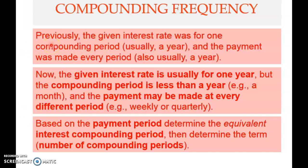If the payment is weekly, the interest rate must also be weekly, and the number of compounding periods must be the number of weeks. If monthly, everything must be in months. If quarterly, everything must be in quarters. If yearly, it goes back to the basic example. In real life you will encounter these complications, so you need to convert the interest rate compounding period or compounding frequency. The actual compounding frequency may differ from the computational compounding frequency, and the number of compounding periods will also be revised.